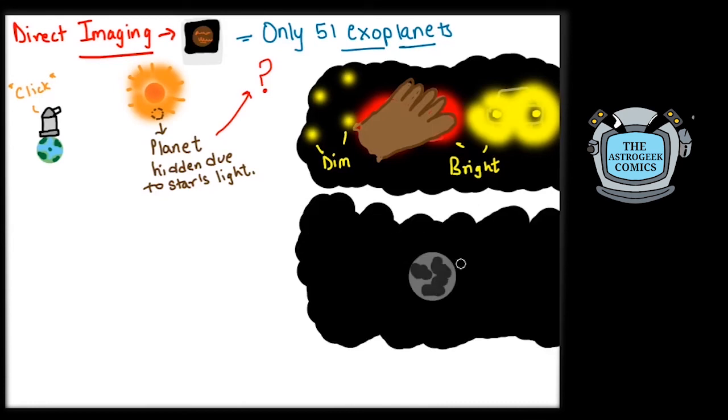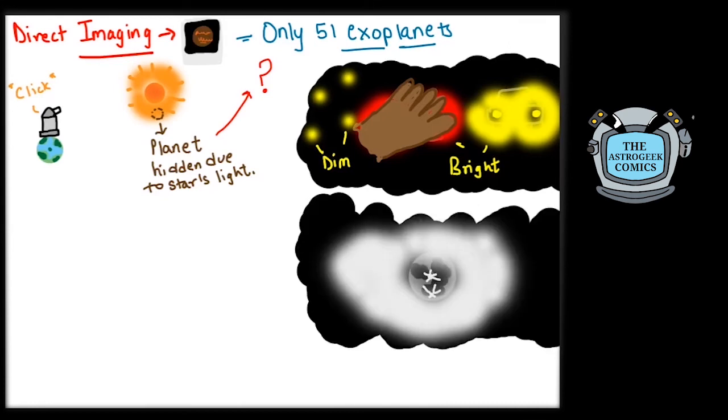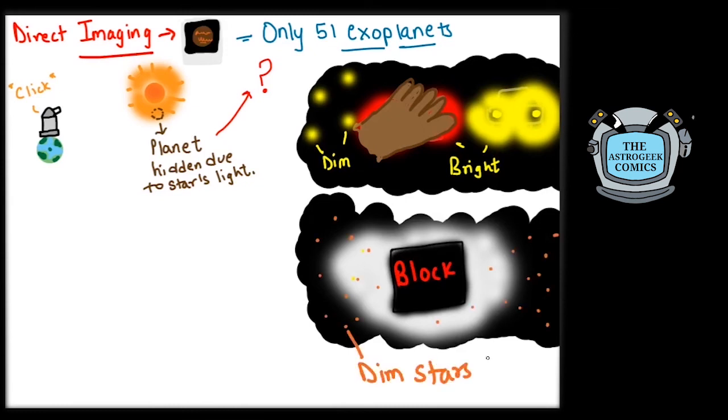For astronomers, this is the same as blocking the moonlight or a terrestrial light to see the dim stars. So, that's our solution. We need to block out just the disk of the star so we do not receive any light from it, which will make the dim light coming from the planets visible.